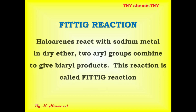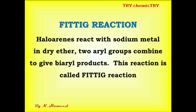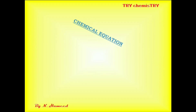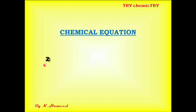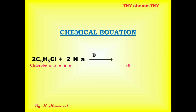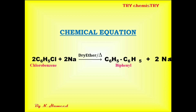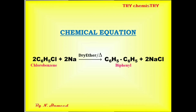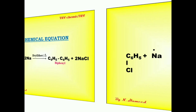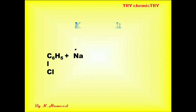Now we can see the second reaction: the Fittig reaction. When haloarenes react with sodium metal in dry ether, two aryl groups combine to give diaryl products. This reaction is called the Fittig reaction. Two molecules of chlorobenzene react with sodium metal in dry ether solution to give biphenyl and two molecules of sodium chloride.